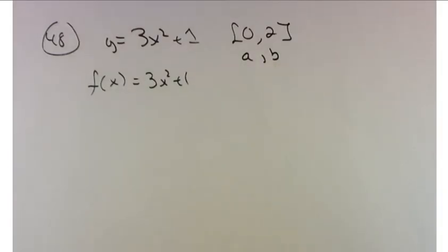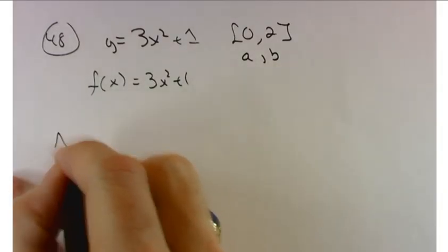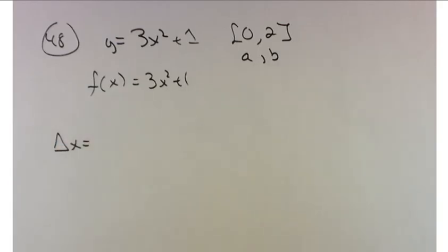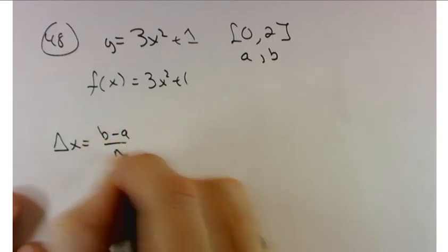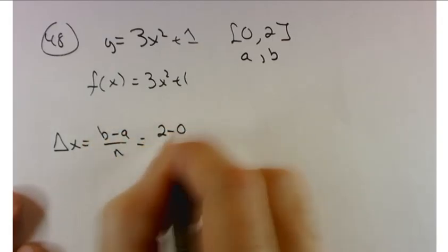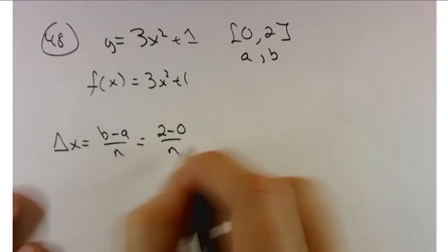Let's start by calculating some things here, first of which is delta x. The width of each of our rectangles is going to be b minus a over n. In this case, 2 minus 0 over n or 2 over n.